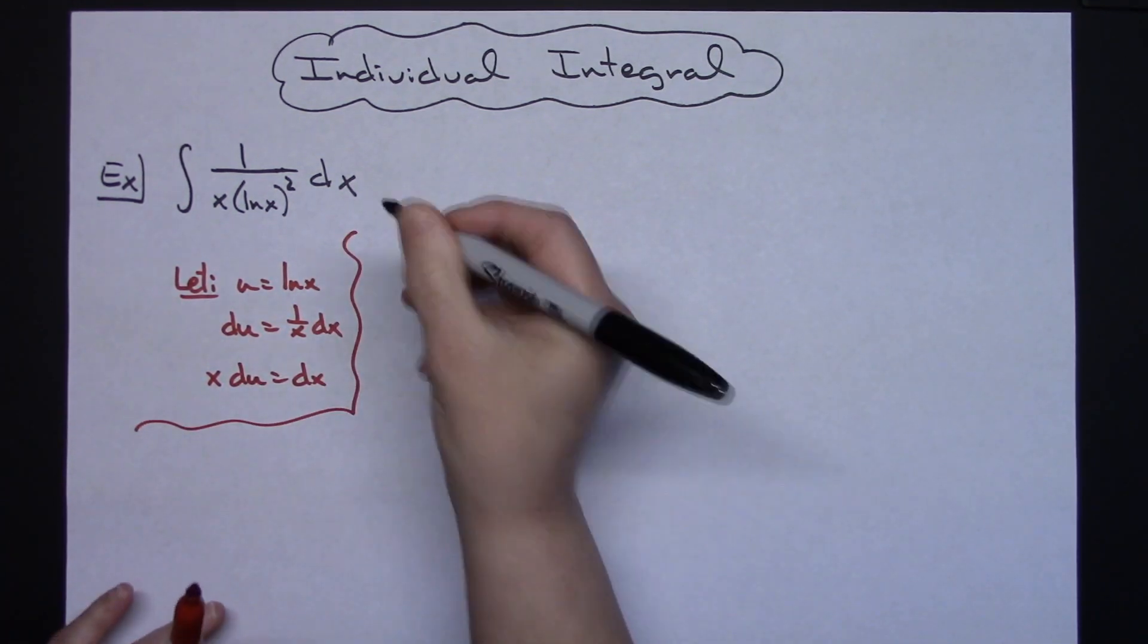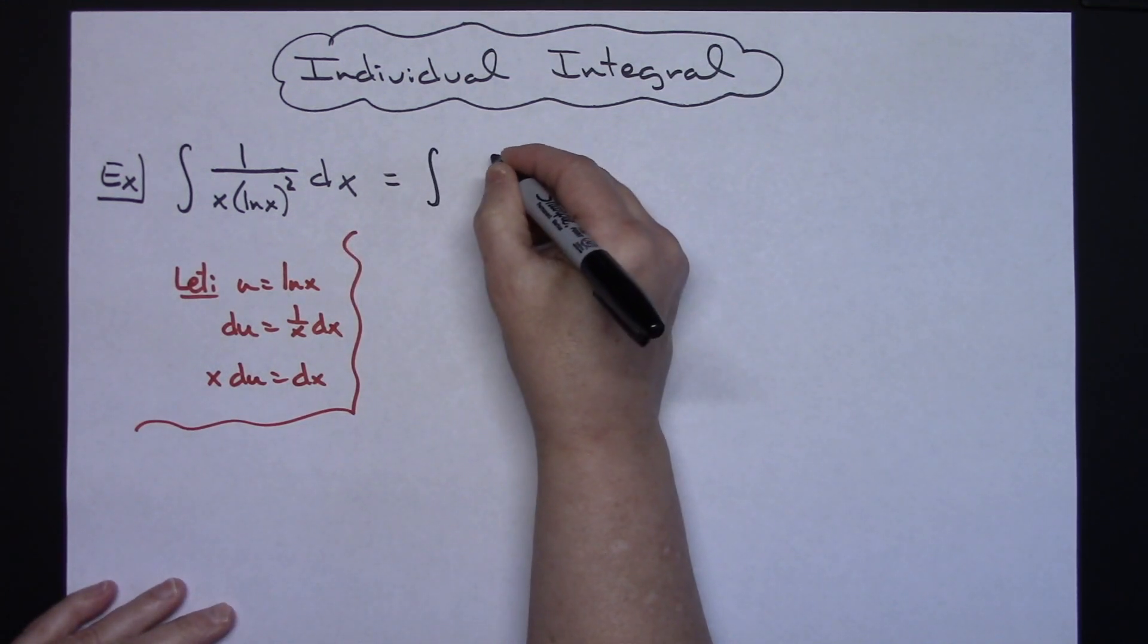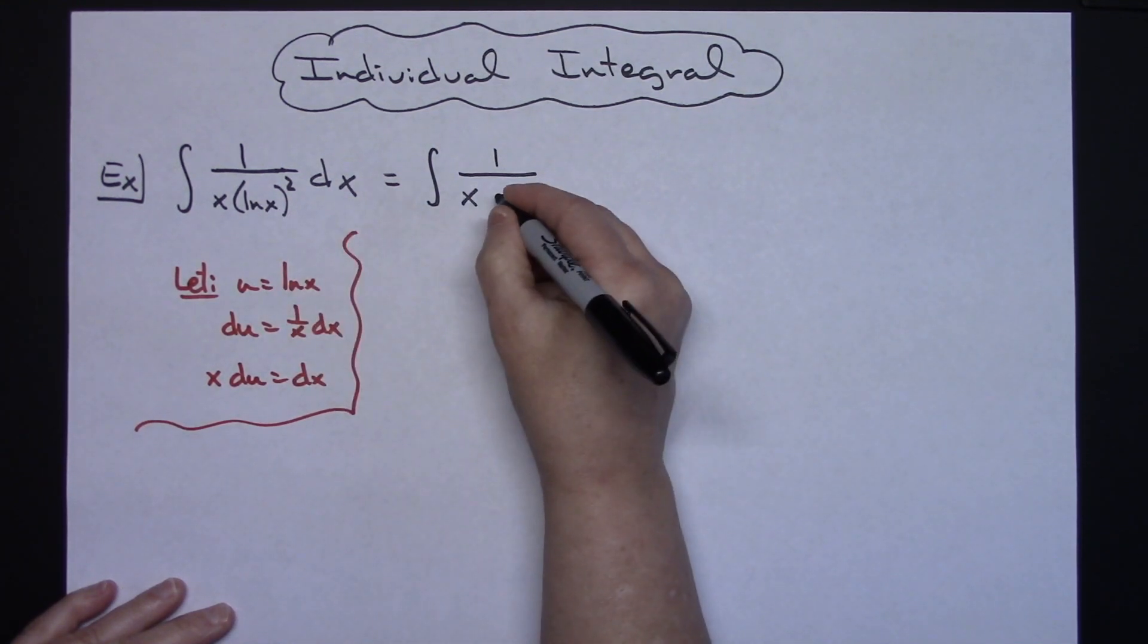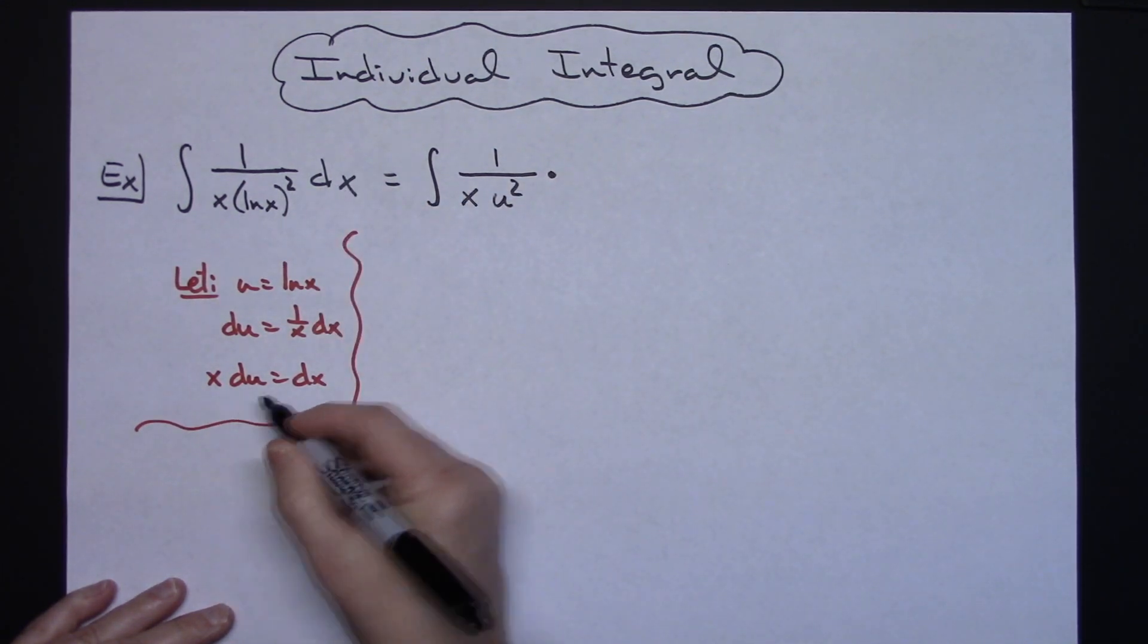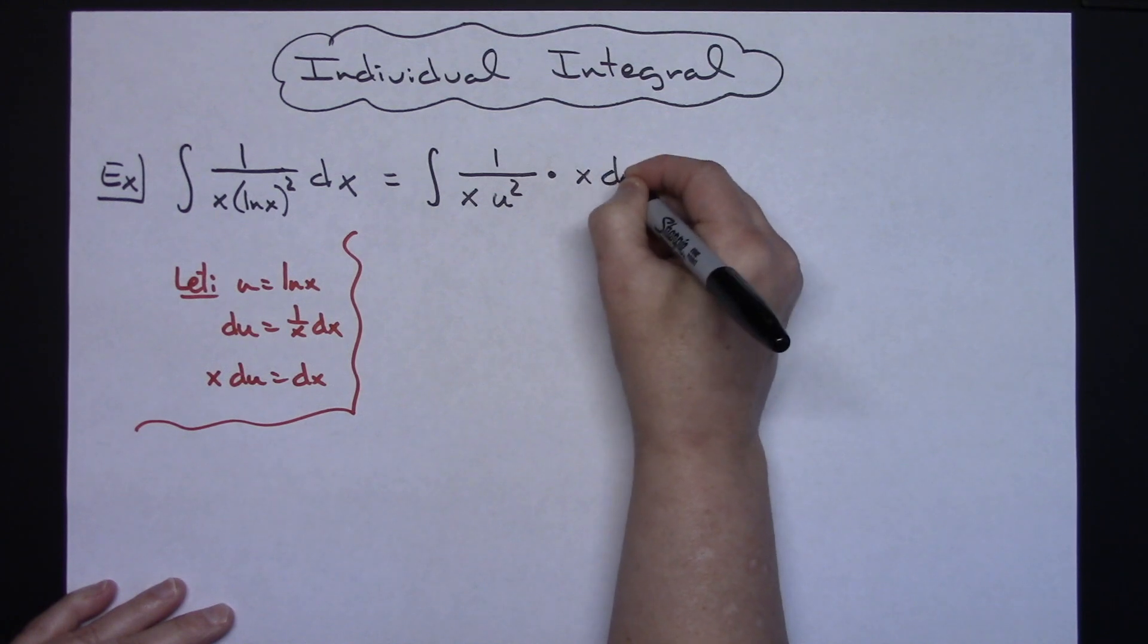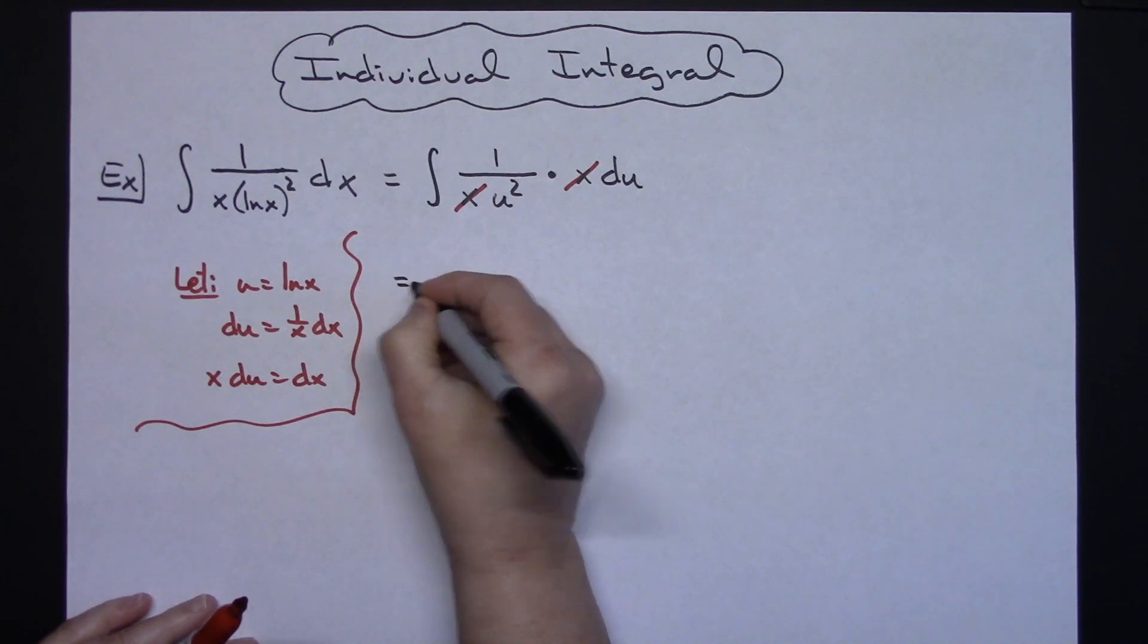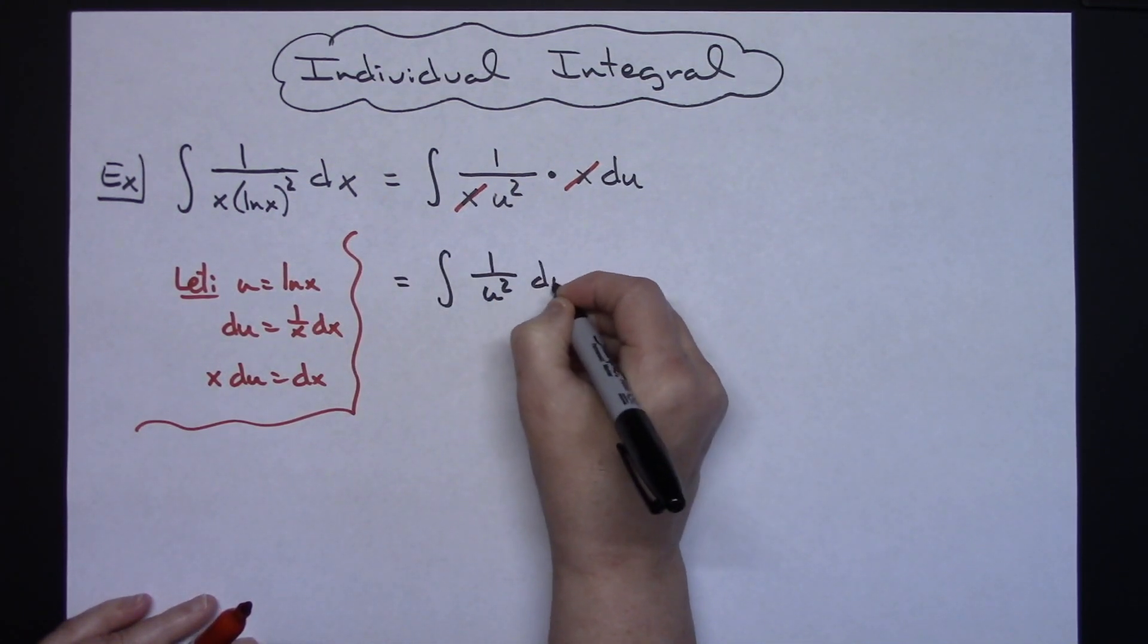Now we'll come back up here to the original integral and we'll make some substitutions. So I'll have the integral of 1 over x, the x is going to stay there, the u will go in for that natural log of x, so u squared. I'm going to change the dx to an x du. That's then going to allow those two x's to cross out, so then I will have the integral of 1 over u squared du.